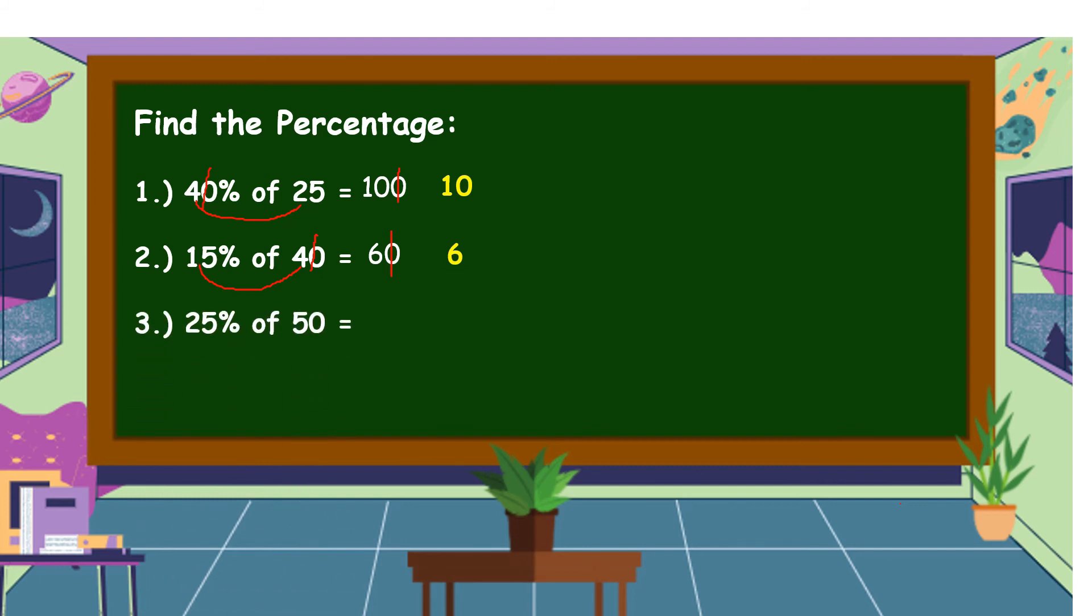Next example, 25% of 50. So, we're going to cancel 1 0 in 50. Then, just multiply 25 and 5, and it gives the answer of 125. Since we don't have 0 here, all we have to do is move the decimal point from the right, going to the left, one decimal place. The decimal point is in between 2 and 5. Therefore, 25% of 50 is equal to 12.5 or 12 and 5 tenths.